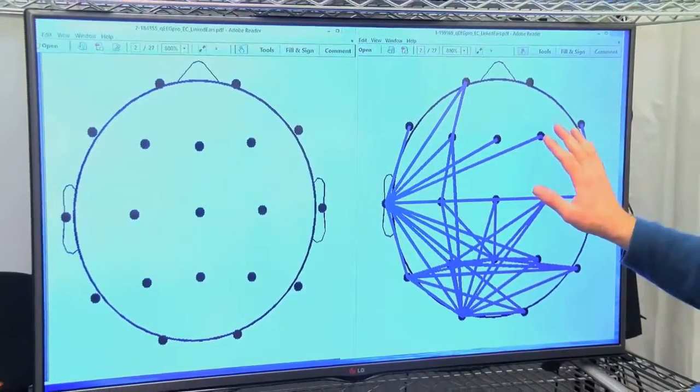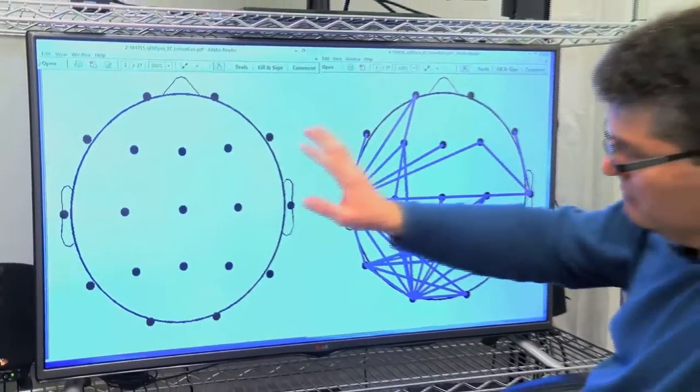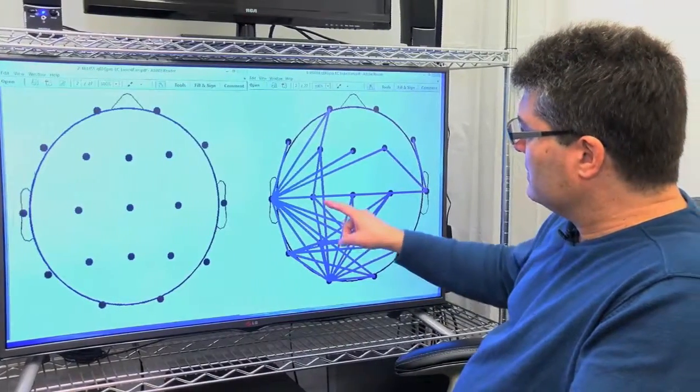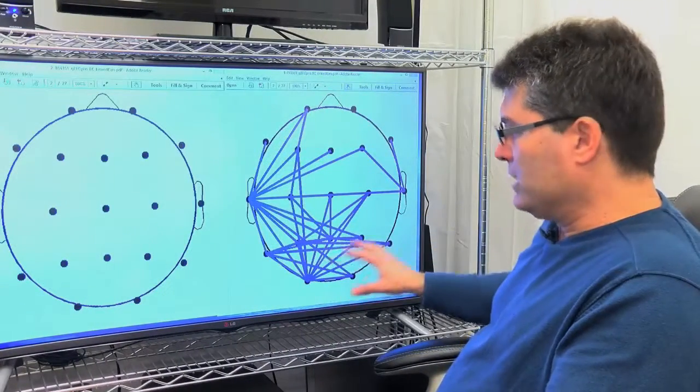And so the difference between the migraine headache person and the normal brain that does not have headaches is these lines show the whole brain is not coordinated.